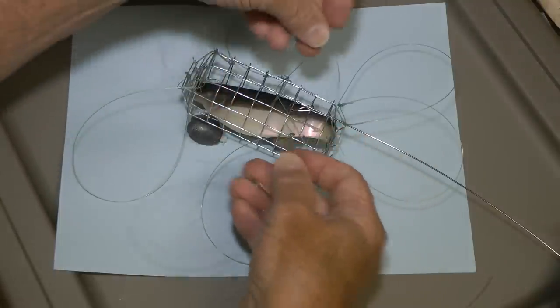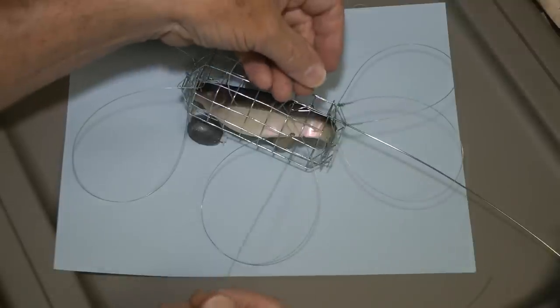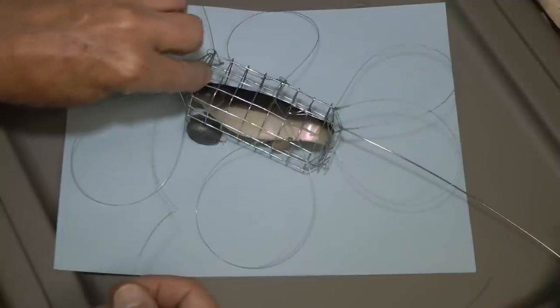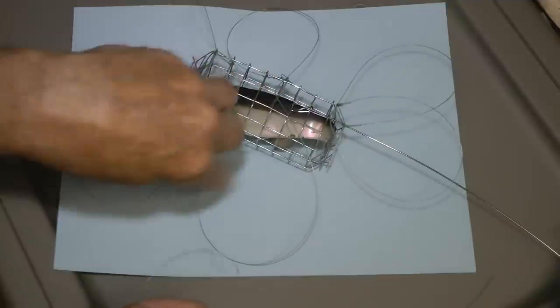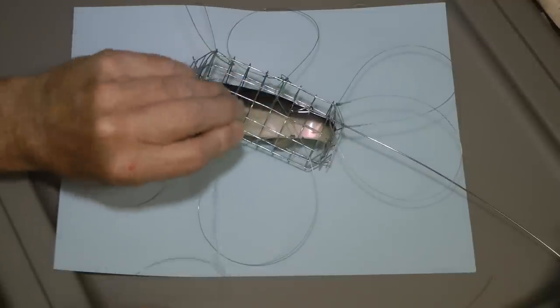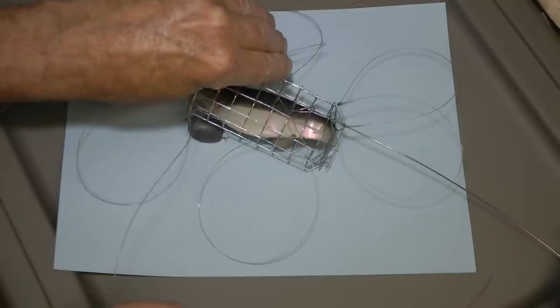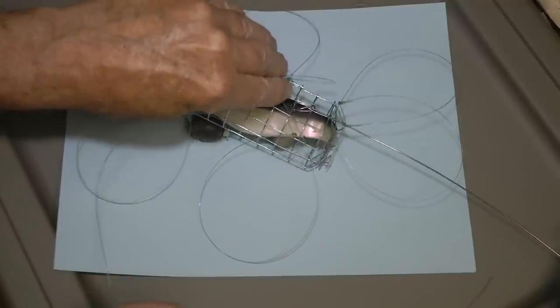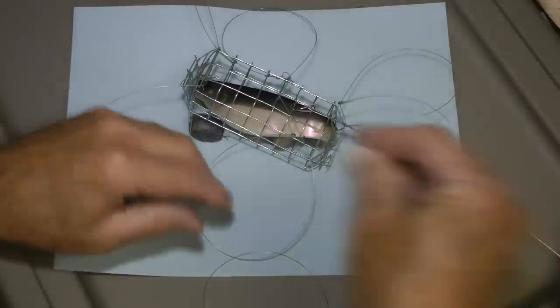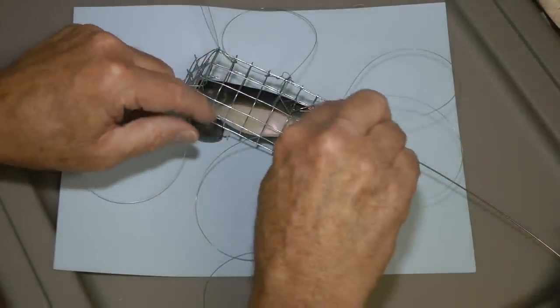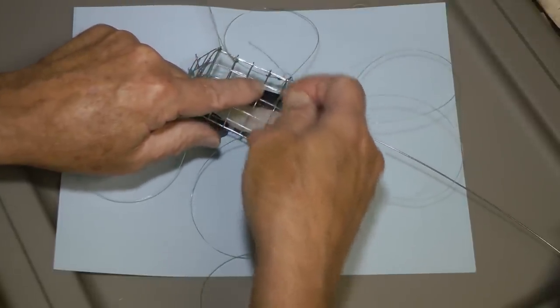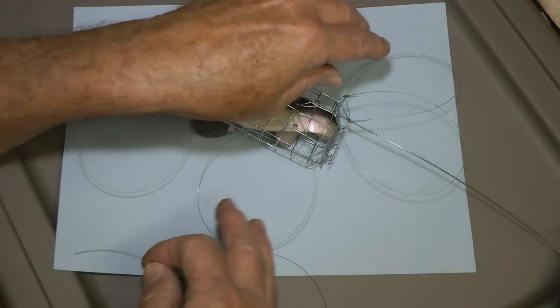So then what I did was you just pull one of these down, you thread it through in three places - front, middle, and back. That gives you these six snares around the cage with your bait in it. You just thread this through the top three wires, tie it over the top and draw it down tight.